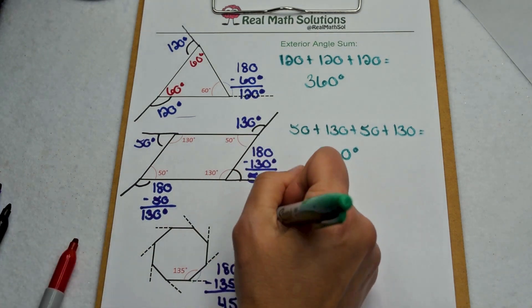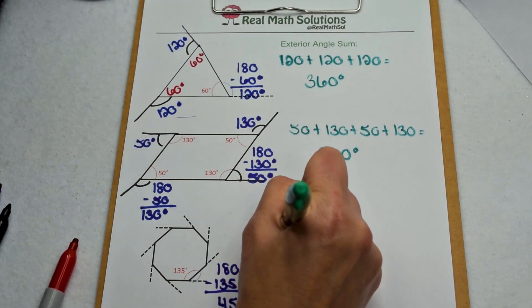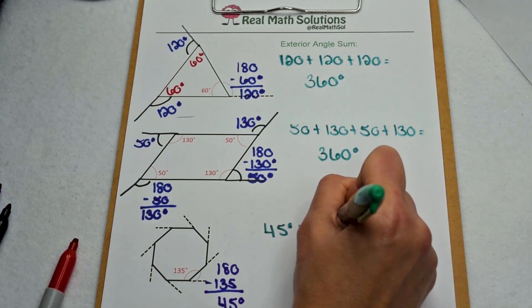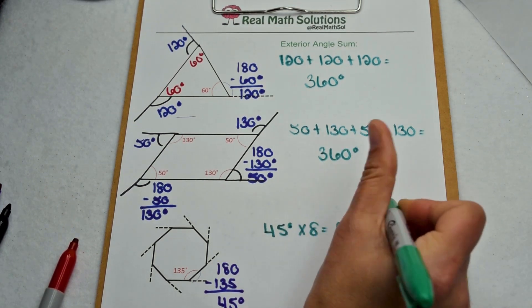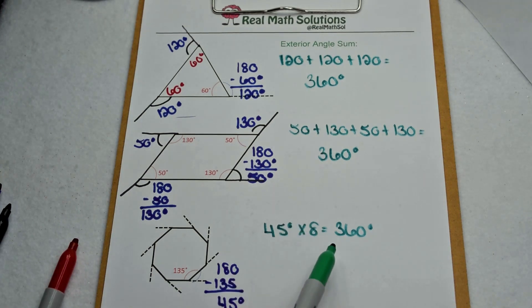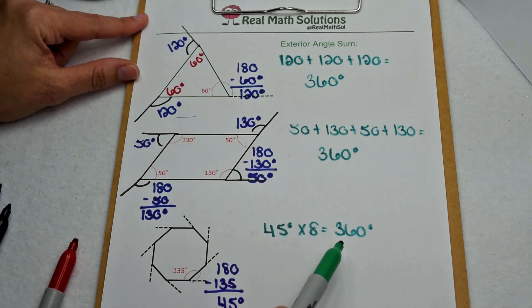So if one angle is worth 45 degrees, they're all worth 45 degrees. So I can do 45 times 8, and that gives me 360 degrees. So once again, 360 degrees is our exterior angle sum.